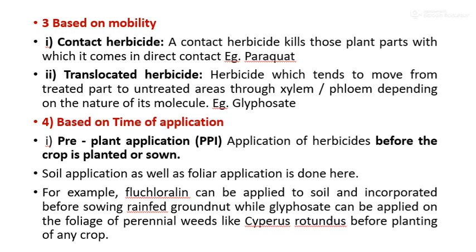Classification based on time of application. There are four types: pre-plant application, pre-emergence, and post-emergence. Pre-plant application means the application of herbicide before the crop is planted or sown. Both soil application and foliar application are done here. Example: fluchloraline can be applied to soil or incorporated before sowing rainfed groundnut, while glyphosate can be applied on the foliage of perennial weeds like Cyperus rotundus before the planting of any crop.